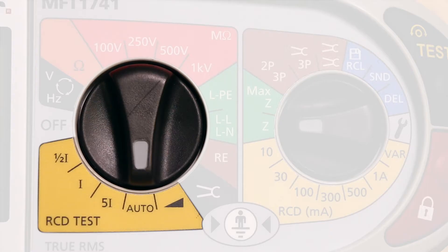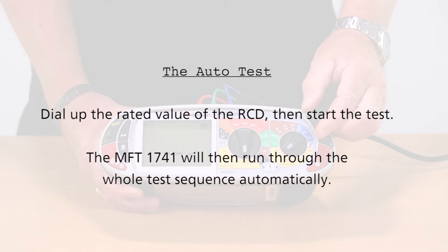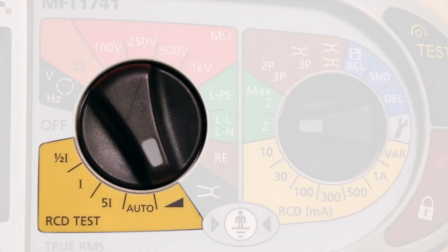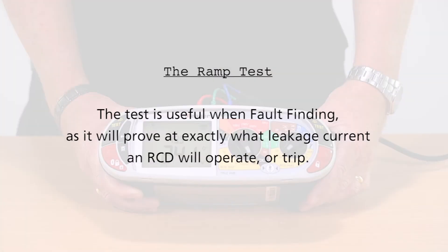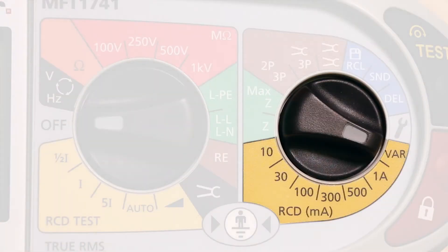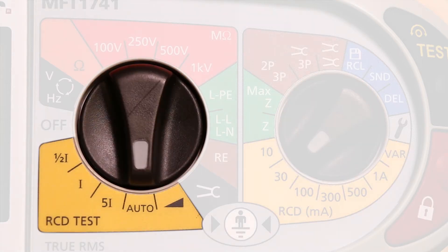We also have the auto test facility, where you can dial up the rated value of the RCD, start the auto test, and the unit will run through the whole sequence. Then we have the ramp test, which is particularly useful when fault finding because it will prove at exactly what leakage current an RCD will operate or trip. There is also a variable RCD test which we will look at later.